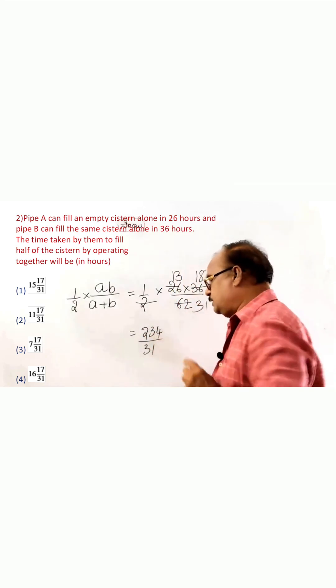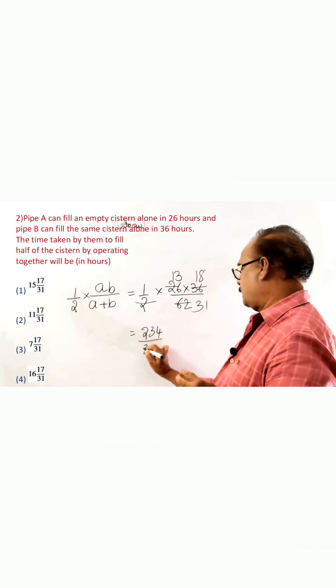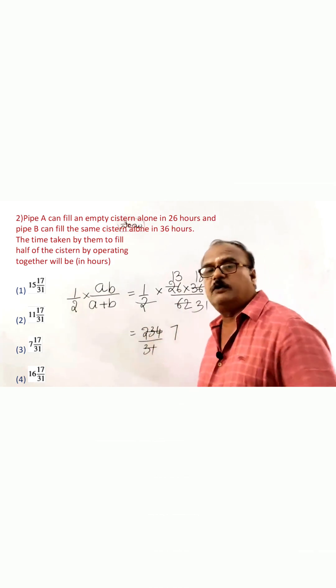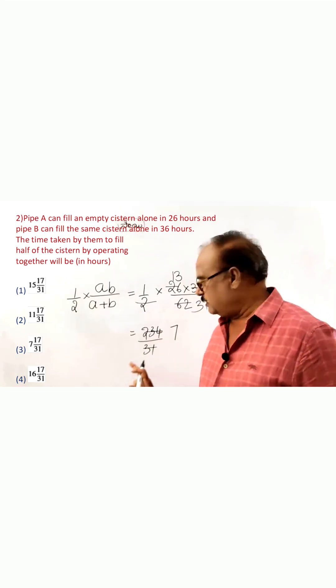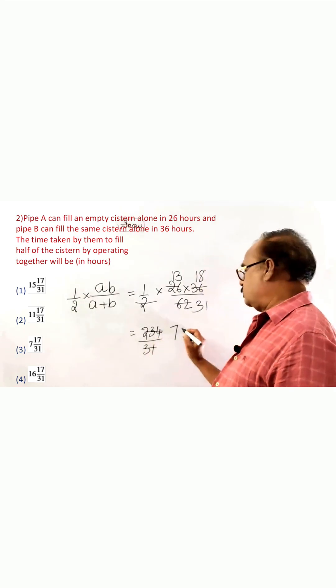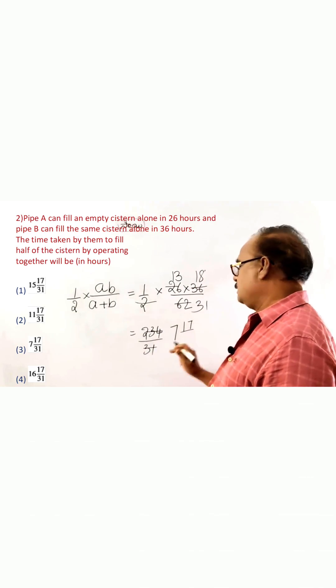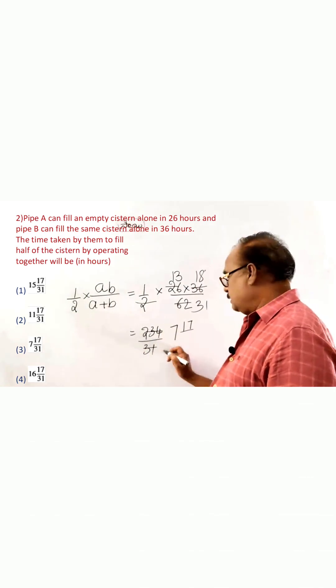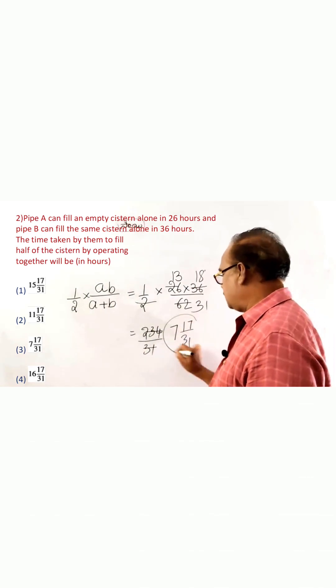31 how many times, only 7 times? It goes 7 times, 7, 31's or 217. So the 7, 17 divided by 31, that is the answer.